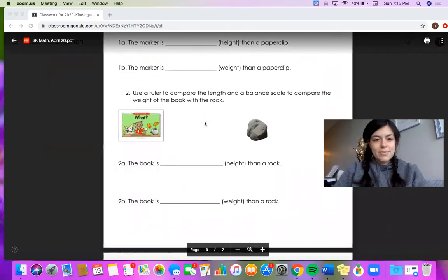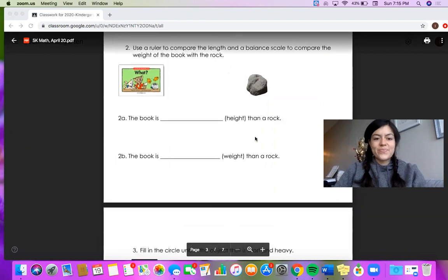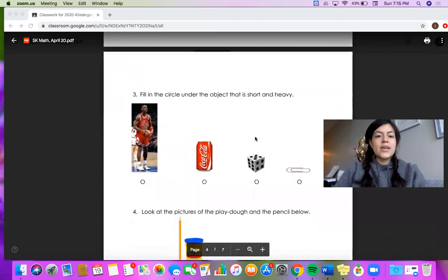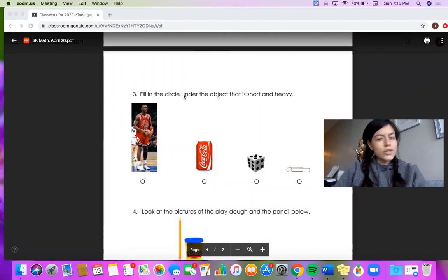In number two it's the same thing. They're asking you to compare the length and the weight of a book and a rock. In number three you'll have to fill in the circle under the object that isn't only short but the object that is short and heavy at the same time. So this basketball player, it's probably heavy but he's not short. You'll have to find the item that is short and heavy.